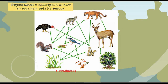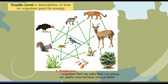First we have producers, and producers are organisms that can make their own energy. This is going to include plants, some bacteria, and some protista. They're going to have specialized organelles or pigments that allow them to absorb sunlight energy or convert inorganic chemicals into energy. So they don't have to eat anything else. Those are the producers, and that's the first trophic level.